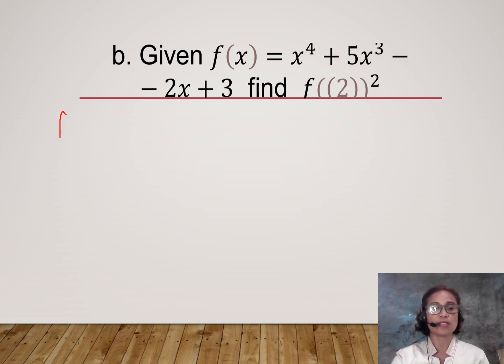In solving this, let's write f(2). Now we are going to substitute 2 and 2 here and 2 here. So 2 to the fourth power is 2×2×2×2 which is 16. Then 2 to the third power is 2×2×2, 8 times 5 is positive 40.